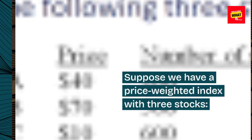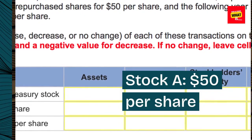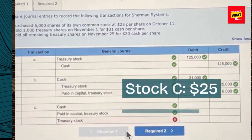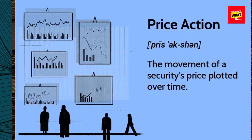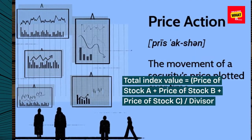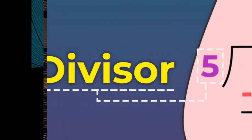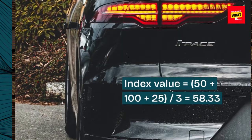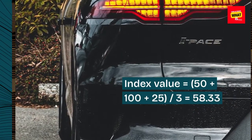Example calculation, simplified: Suppose we have a price-weighted index with three stocks. If the divisor is three, then the index value equals (50 + 100 + 25) / 3 = 58.33.